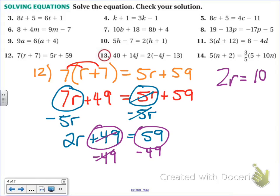Then, to get r by itself, divide by 2 on both sides. The 2's cancel and I get r equals 10 divided by 2 is 5.